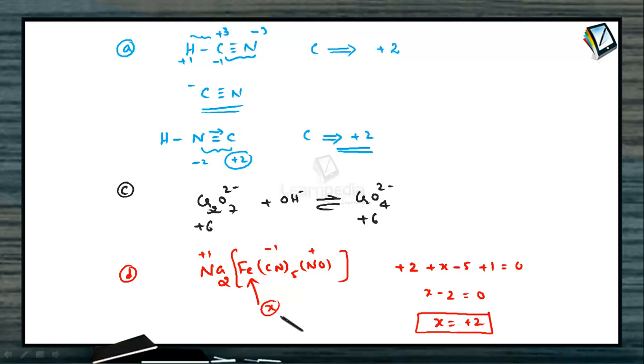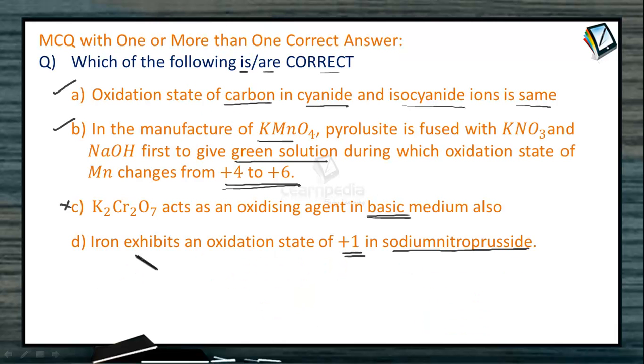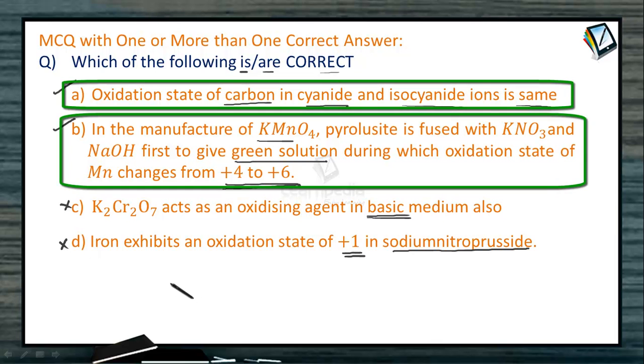Thus, iron exhibits an oxidation state of +2 in sodium nitroprusside. The D option states iron exhibits an oxidation state of +1 in sodium nitroprusside, which is wrong because it exhibits +2. Therefore D is wrong. Thus, A and B are the correct answers, C and D are wrong.